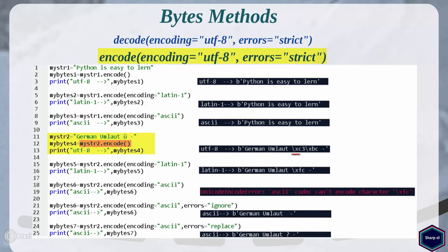When I call encode method with the encoding argument set to UTF-8, the encode method returns a bytes object where the German letter umlaut U is represented by 2 bytes. But when I call encode method with the encoding argument set to latin1, the encode method returns a bytes object where the German letter umlaut U is represented by 1 byte. This is because latin1 uses 1 byte per character, so in latin1 you can only encode 256 characters. Whereas UTF-8 is a variable-length character encoding set where a character can take up to 4 bytes, and the German character umlaut U takes 2 bytes.